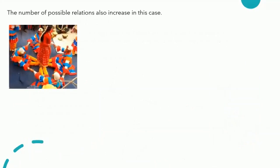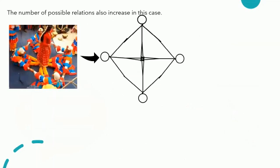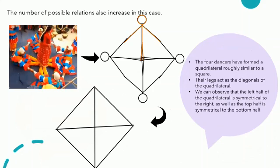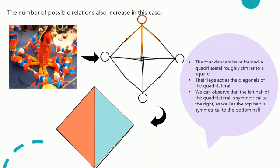Now let us look at a group of dancers performing the same dance form Cholia. Here the number of possible relations also increase. Here is the simplified version where each person is shown. The four dancers form a quadrilateral roughly similar to a square. Their legs act as the diagonals of the quadrilateral. We can also observe that the left half is symmetrical to the right, and the top half is symmetrical to the bottom half.